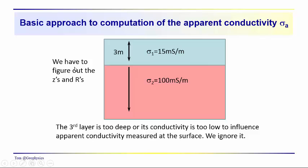We only have one z in this problem. We have two layers, and an easy way to remind yourself of how many z's you would have, it would be the number of layers minus one. So we have one z and we also have only one R. In this case, we assume that the third layer is just too deep or that its conductivity is too low to influence the apparent conductivity that we'd measure at the surface, so we just ignore it.